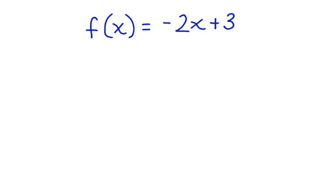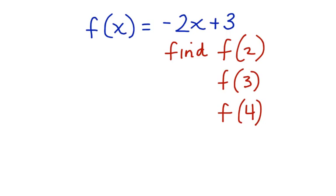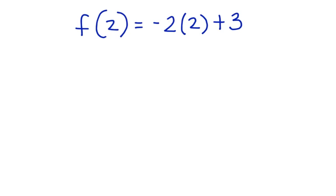Take a look. We're going to find the function of 2, the function of 3, and the function of 4, and we're going to do that by substituting 2, 3, and 4 into this function negative 2x plus 3. Then we'll be able to find the value of the function. Let's find the function of 2. Notice that we substituted 2 in every place that we saw an x in the original function, so the function of 2 is equal to negative 2 times 2 plus 3.